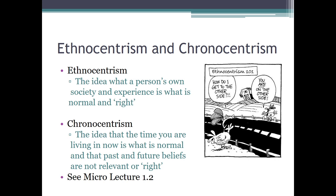A couple other things to keep in mind as we approach our study of crime — this is our second micro lecture. Two ideas: ethnocentrism and chronocentrism. Ethnocentrism is the idea that your own society and your own experience is what is normal and right. This is ingrained in all people in all cultures — nothing unique to America or to you. A Roman in 100 AD would be ethnocentric; a Japanese citizen during the Shogunate in the 1600s would be ethnocentric; and if I talked to you today, you're going to have some ethnocentric ideas — that's just natural. Aligned with that is chronocentrism: the idea that the time you're living in is what is normal, and past or future events are not relevant.